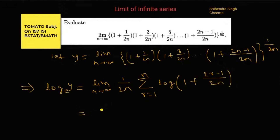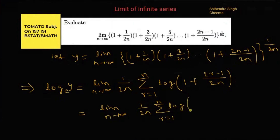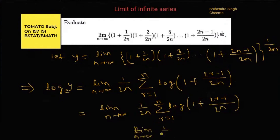Now we write it as limit n tends to infinity of 1/2n times summation of r equal to 1 to n of log(1 + (2r−1)/2n).